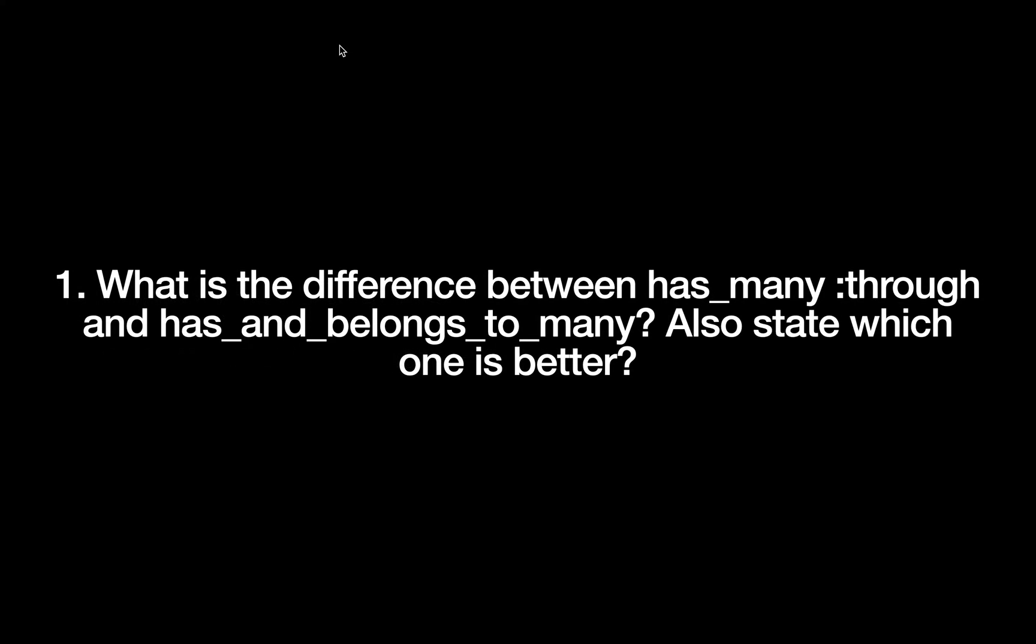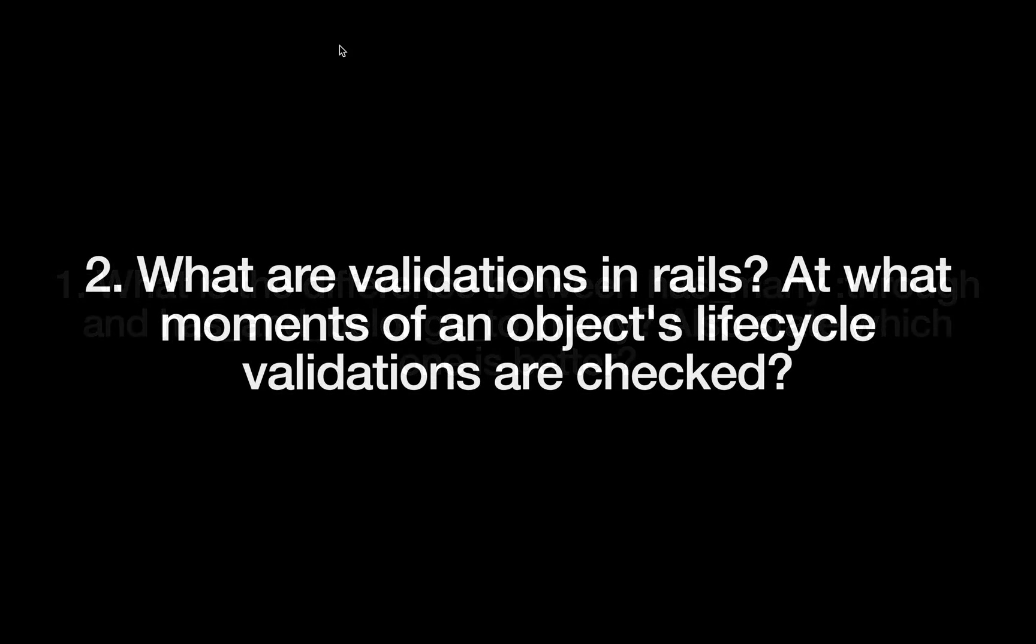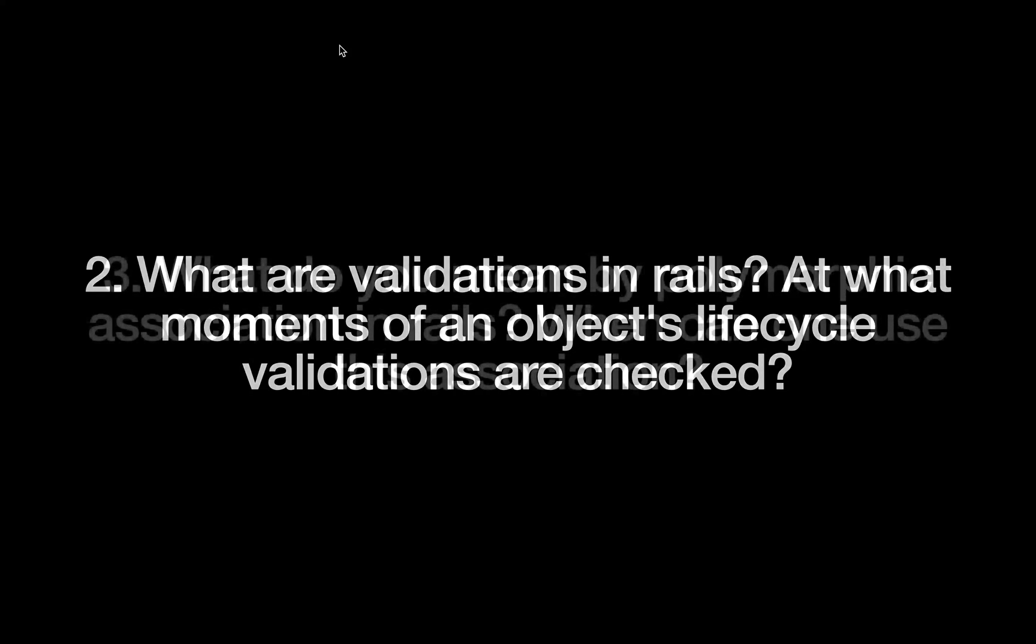What is the difference between has_many through and has_and_belongs_to_many? Also state which one is better. What are validations in Rails? At what moments of an object's life cycle are validations checked? What do you mean by polymorphic association in Rails? When can one use this association?